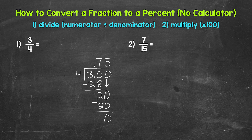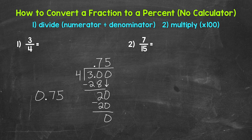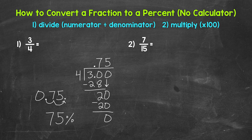We went all the way through our division problem and we have that clean cut zero at the bottom, so we are done: 0.75. I'm going to rewrite our decimal — starting with a zero and then a decimal point, which helps us recognize we have a decimal here. So 0.75 — three fourths in decimal form is 0.75. Let's multiply it by 100 to convert it to a percent. Move the decimal twice to the right: once, twice. This gives us 75%. We don't need that decimal at the end since we have a whole number. So three fourths equals 75%.